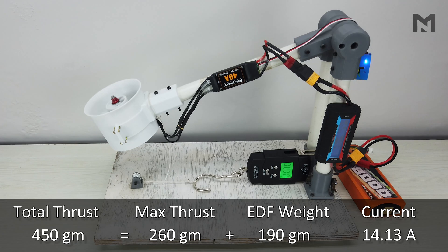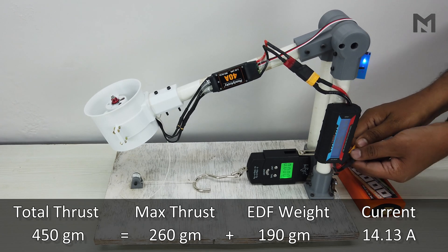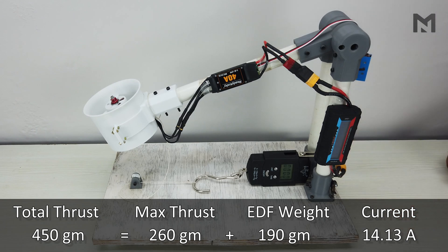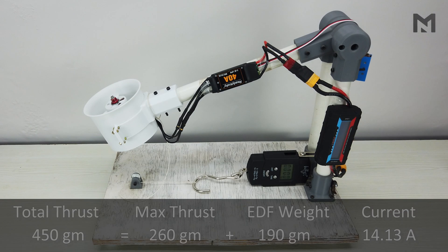We get a maximum thrust of 260 grams at 14.13 Amperes. And on adding EDF weight, we get a total thrust of 450 grams at 14.13 Amperes.